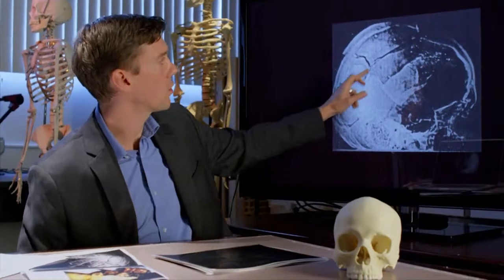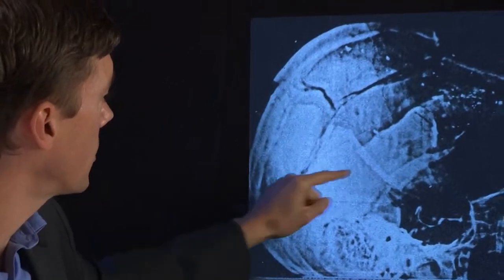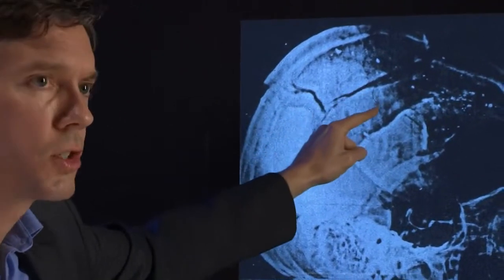So you have these long fractures that'll radiate out from an entry wound, and then you have these concentric fractures that happen perpendicular to the original fracture lines.